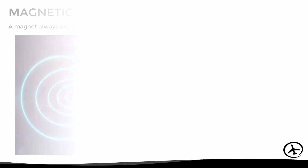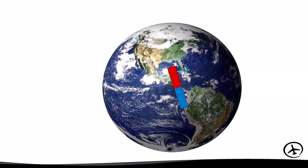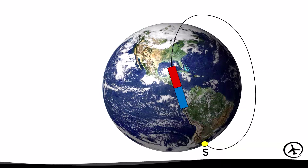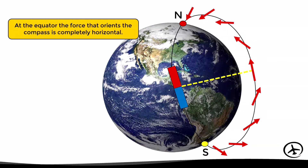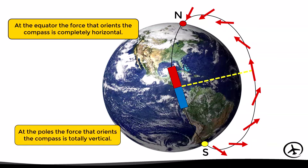The planet's core acts as a giant magnet, creating a magnetic field represented by flux lines. The point at which a flux line leaves the planet is known as the magnetic south pole, while the point where it enters the planet is known as the magnetic north pole. Observing the flux lines in detail, we can see that at the equator the lines are parallel to the surface, meaning the force that orients the compass is completely horizontal, while at the poles the lines are nearly vertical, meaning the force is totally vertical.